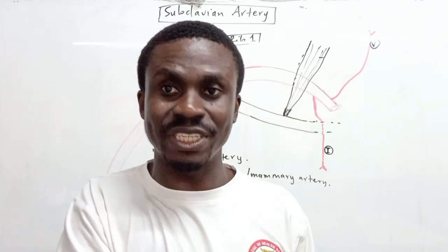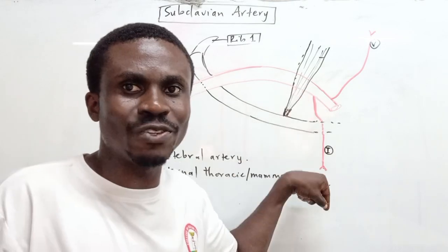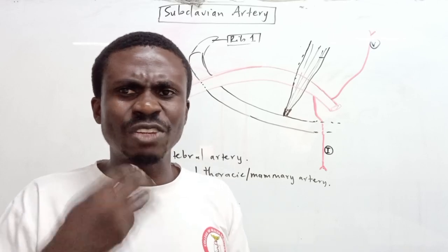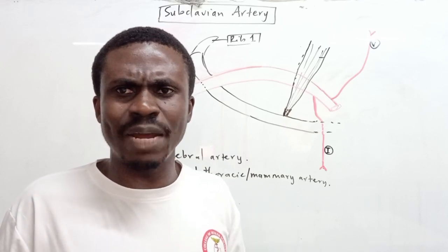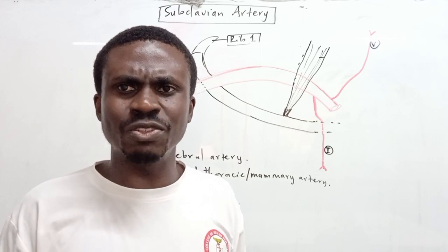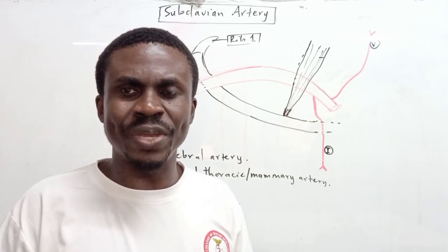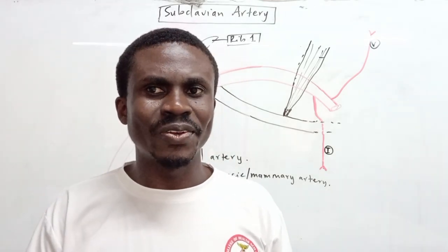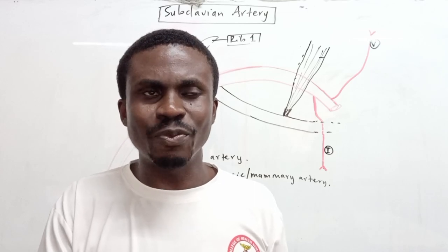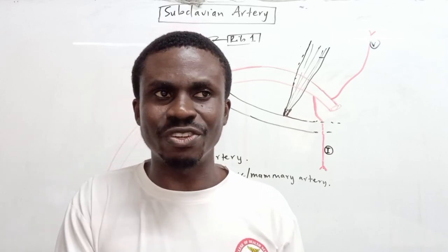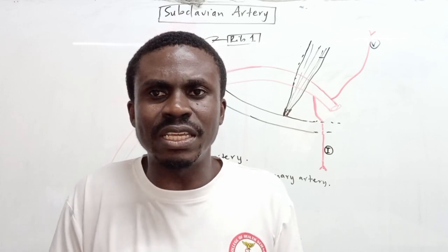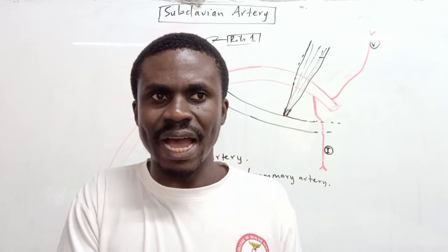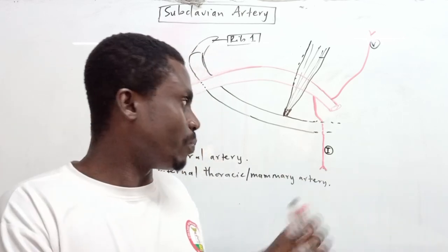The internal thoracic artery gives branches to supply the first six anterior intercostal spaces — so the first six anterior intercostal arteries arise from it. It also gives medial sternal branches to supply, for instance, the remains of the thymus, and it gives the pericardiacophrenic artery, which runs with the phrenic nerve.